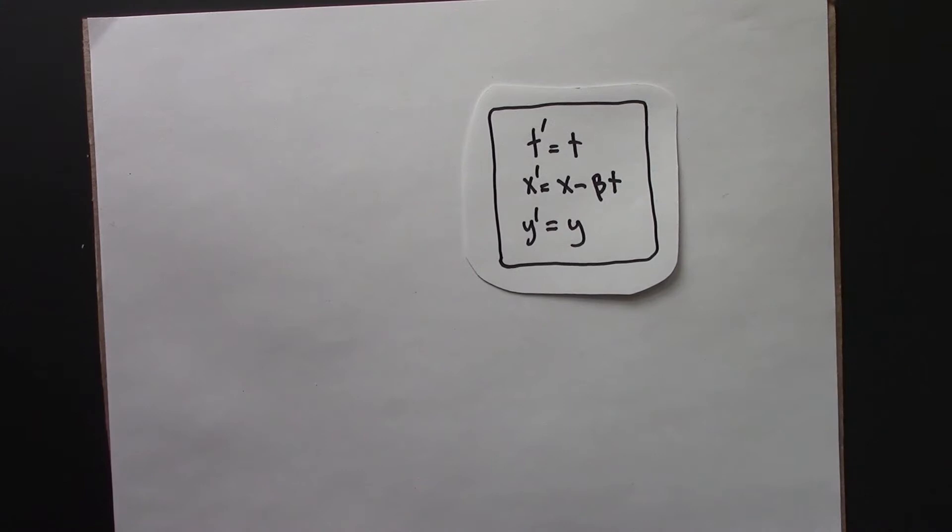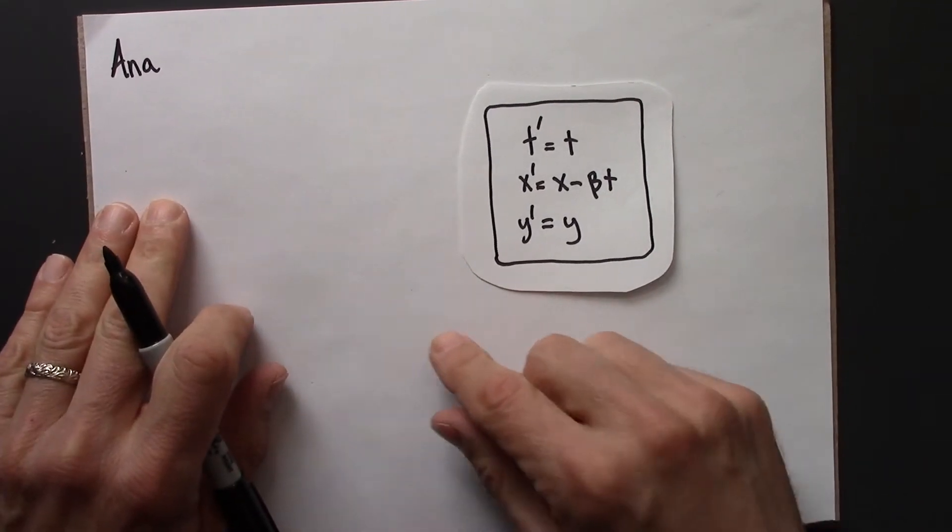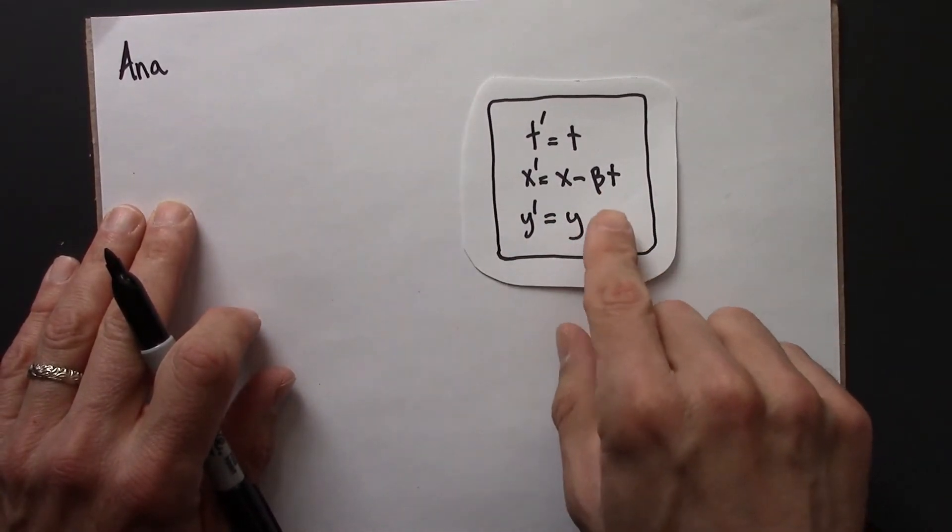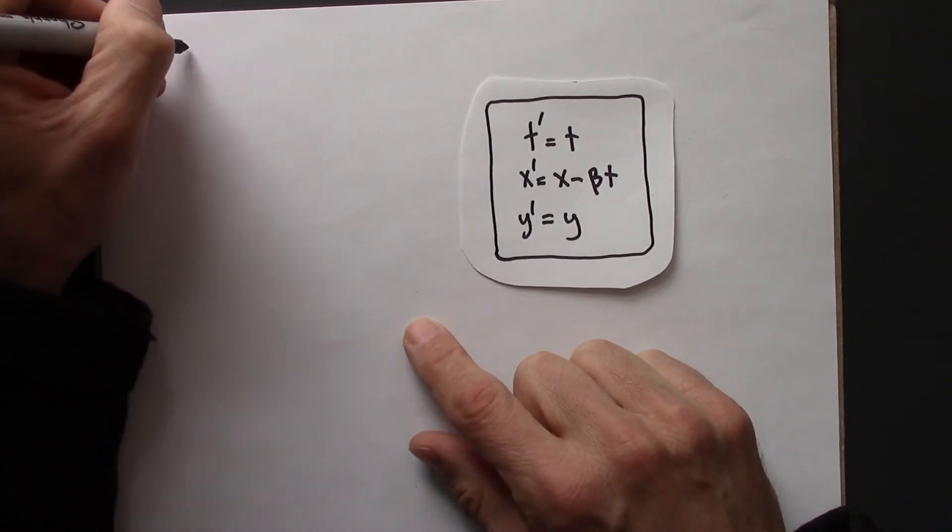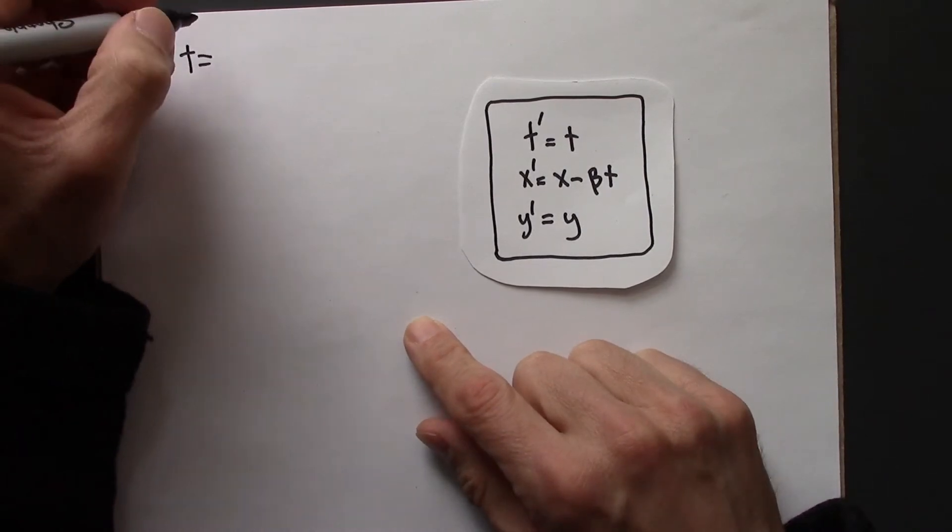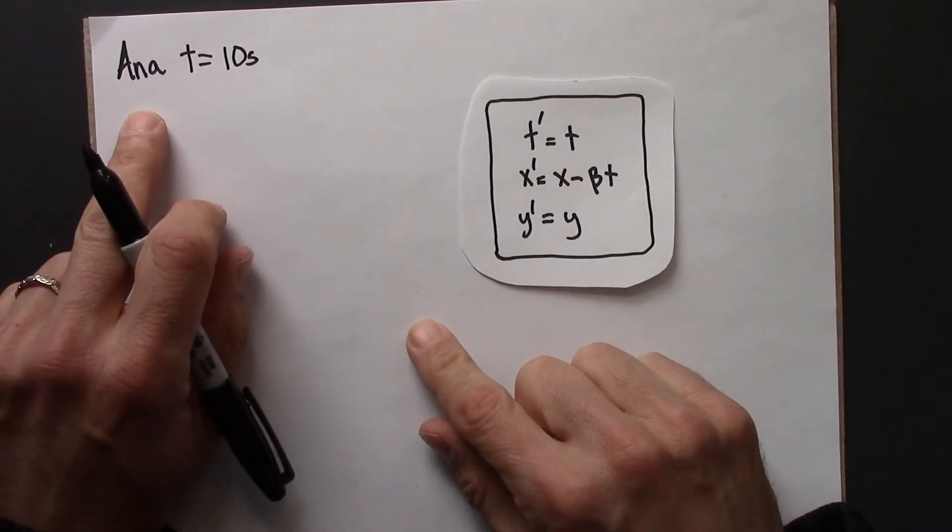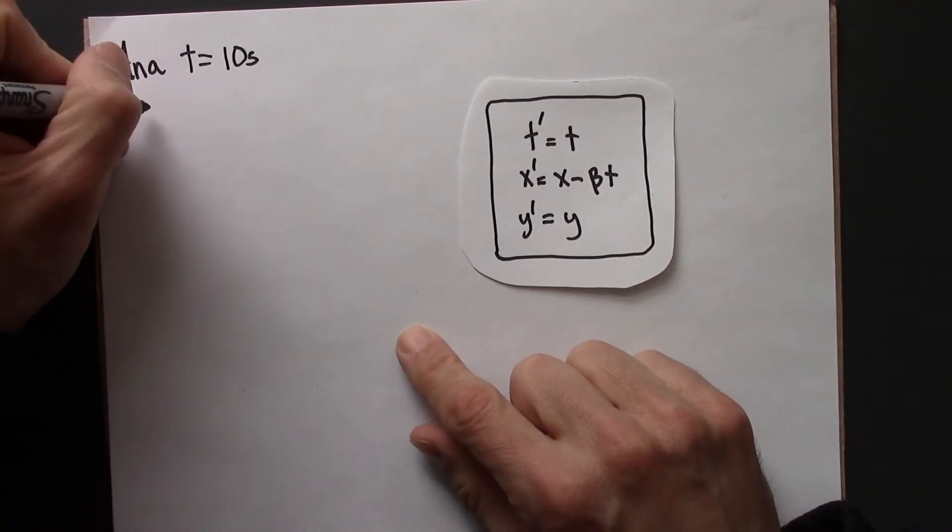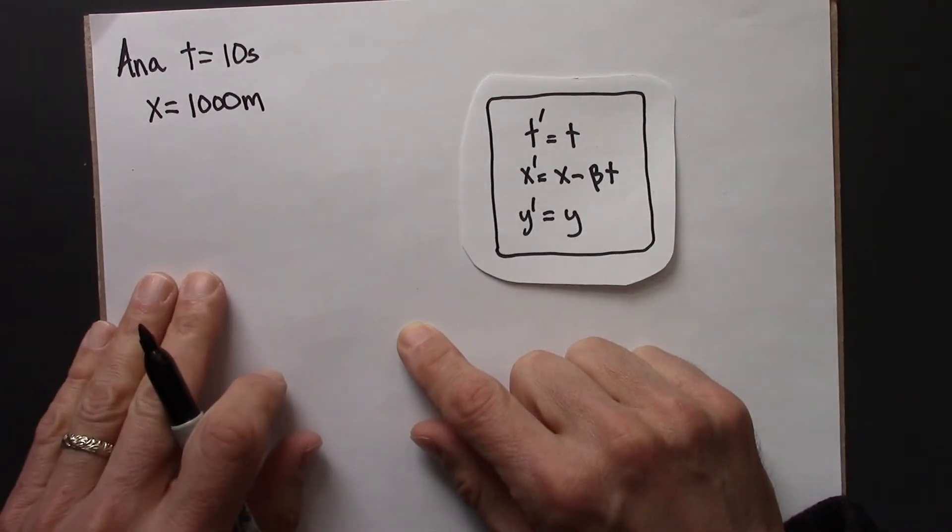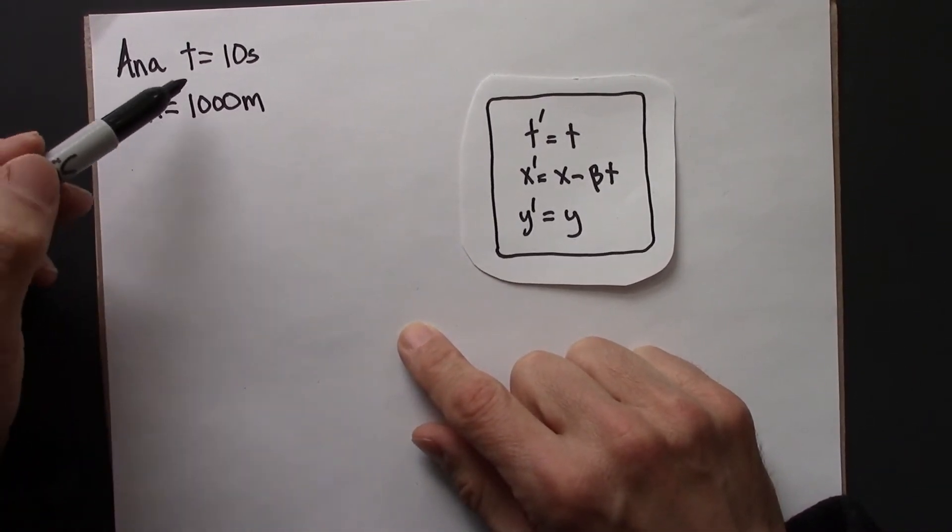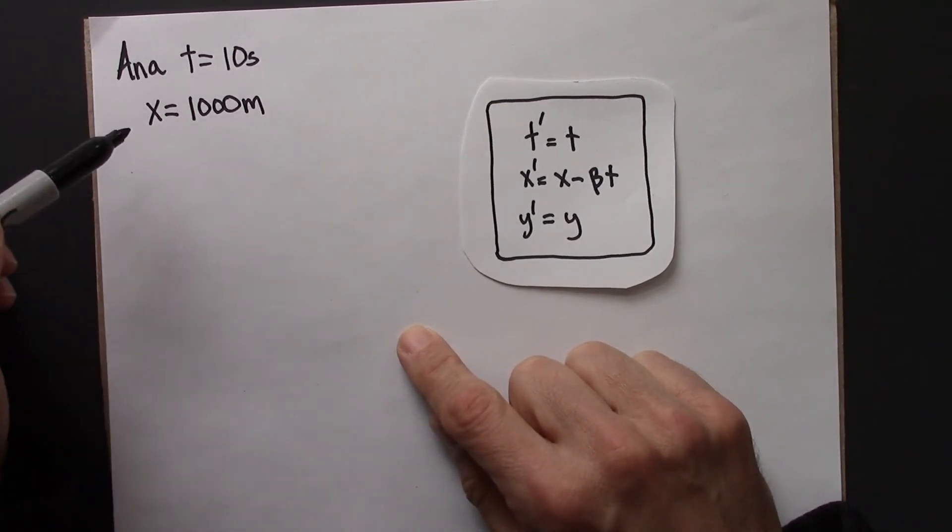So let's start with Anna. And Anna, at rest next to the train, is going to be X, Y, and T. So the firecracker for Anna occurs at 10 seconds. That's just given in the problem. And the problem also tells us that the firecracker explosion occurs 1,000 meters from her. So the values for the space-time coordinates for Anna were stated right in the problem. T is 10, X is 100.